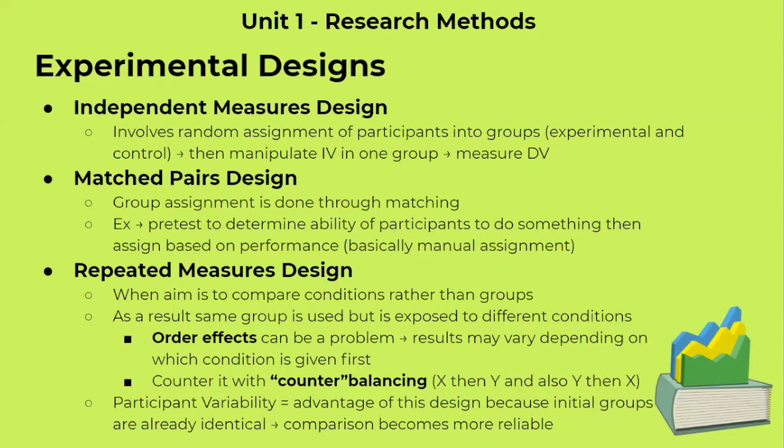The second design is matched pairs design. This is assignment done through matching. For example, participants in a memory study would take a pre-test to determine their ability in terms of memory, and then they would be assigned based on their performance. Maybe the top scores will be one group and the bottom scores will be another group, depending on what the researcher wants. This can be considered manual assignment because the researchers themselves gather data in order to assign participants into groups.